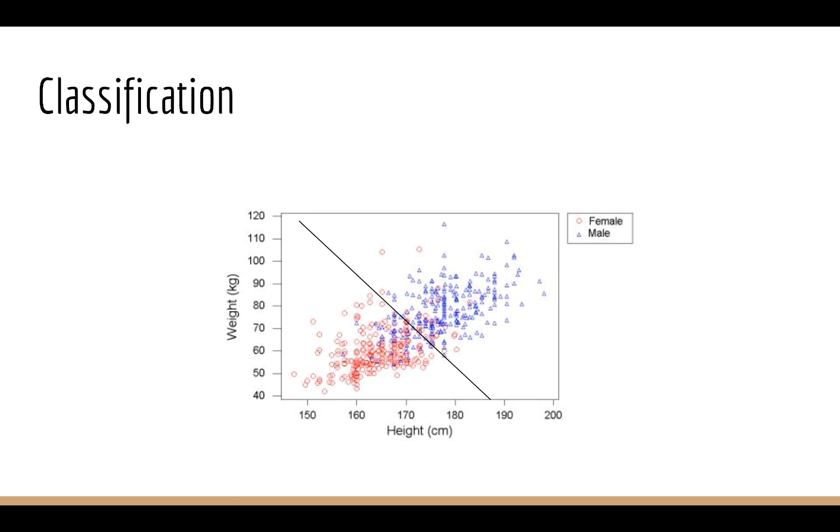Now what I can do is, say I have a new point, but you don't tell me whether it's a boy or a girl. Well, I can use what I've learned from the training data. So for example, you just tell me the height and the weight, and I can tell you whether or not that's a boy or a girl. So how do I do this? Well, I can look at which side of this line this new point goes on. I know which side represents boys and which side represents girls. And so from that, I can predict that this point belongs to a boy.